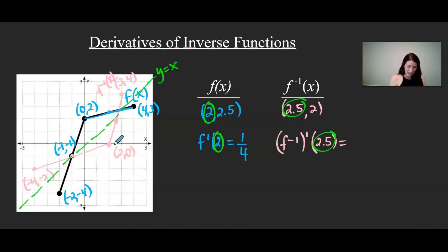Okay, derivative at 2.5 on the f inverse function would be the slope of this line segment right here. And this line segment rises one, two, three, four, and runs one. So that slope is four.